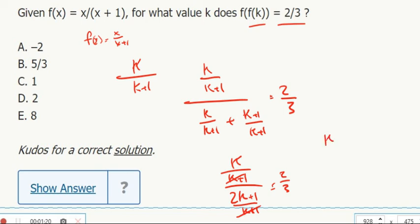Nominators will cancel. So k over 2k plus 1 equals 2/3.